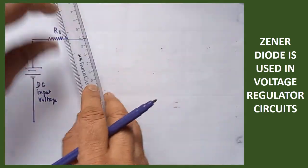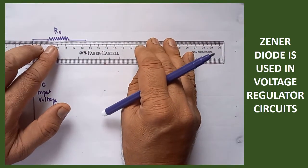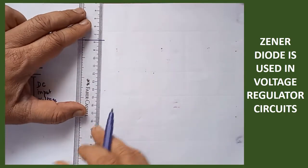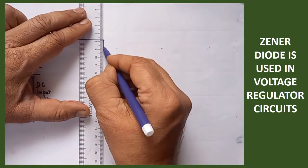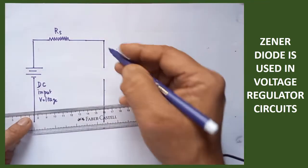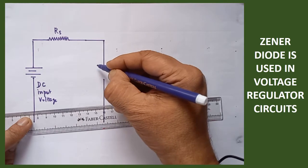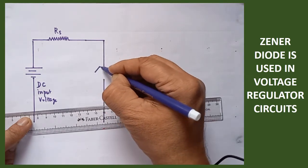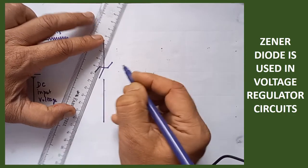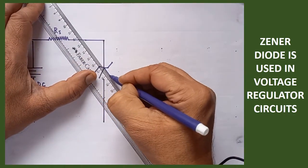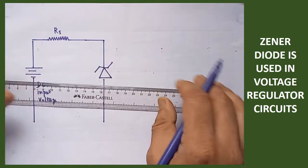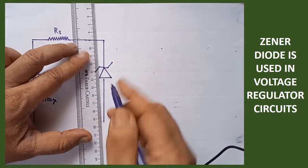You know where the Zener diode is to be connected. That Zener diode plays a vital role. Here the Zener diode is to be connected. The symbol of the Zener diode must be drawn properly — you draw it like this. This is called a Zener diode, and it is used in the circuit of the voltage regulator.